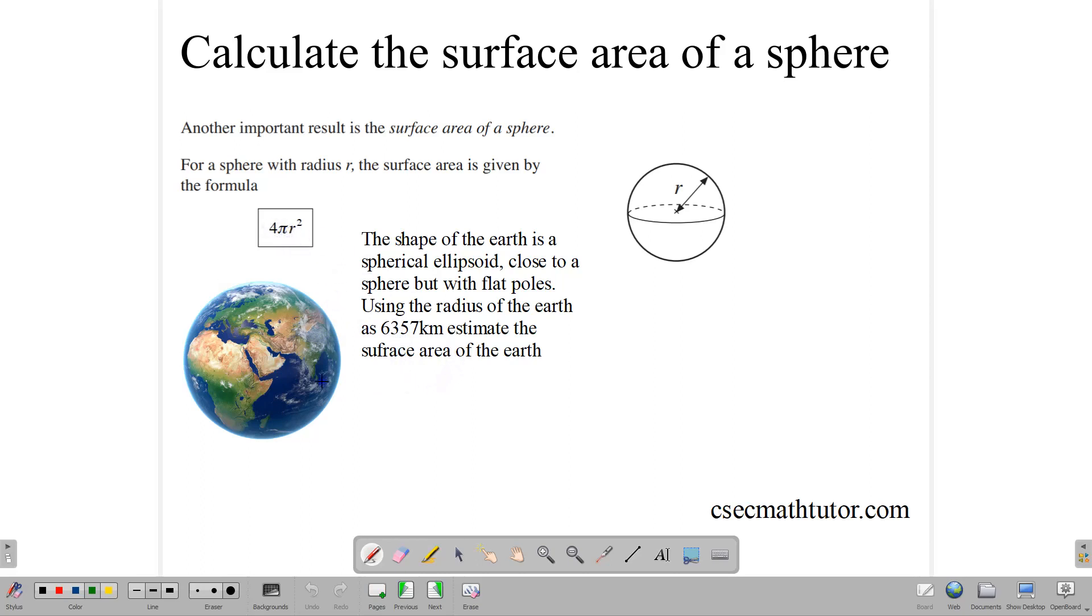And so, applying this formula here, 4πr², that's 4, using pi as 3.14, times 3.14, times the radius, 6,357.